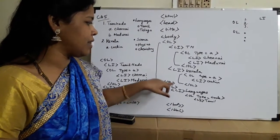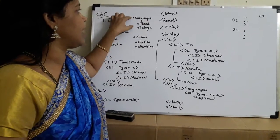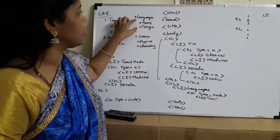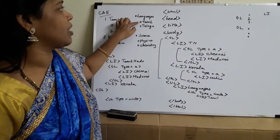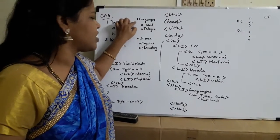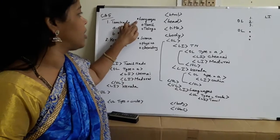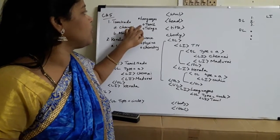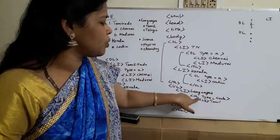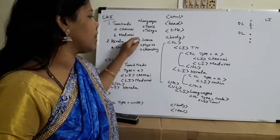So in the UL unordered list, I am giving the heading 'Languages,' and within Languages I list Tamil and Telugu using UL type=circle. Without any type specified, you get a filled bullet point. If you want a hollow circle, use UL type equal to circle. So circle gives the hollow circle, and Tamil and Telugu are displayed inside it.